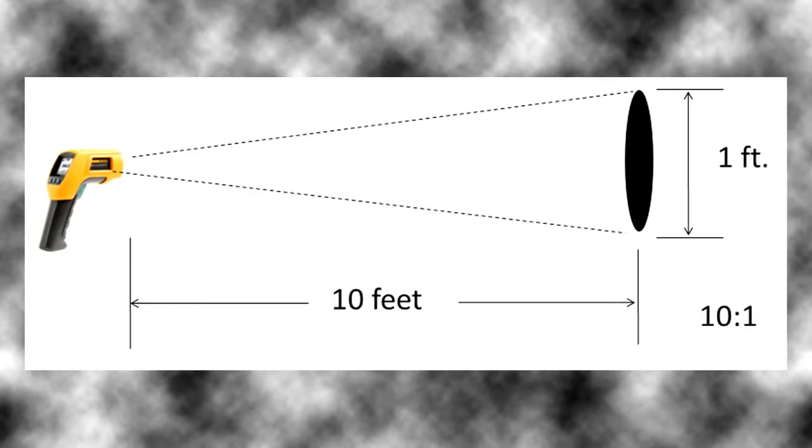So the laser would be pointed at the center of this 1 foot diameter circle, and the IR thermometer would be measuring the average temperature of that 1 foot diameter circle.